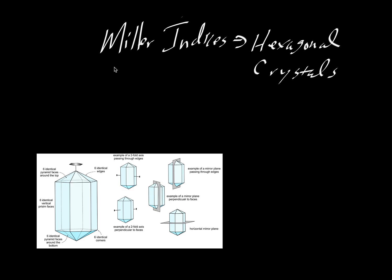So here we're going to show an example of finding the Miller indices on hexagonal crystals. They're a little bit different than, say, monoclinic or triclinic or cubic.